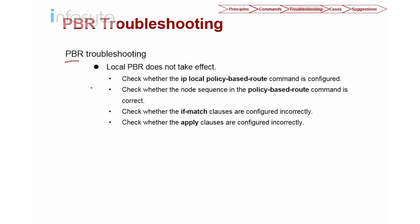For PBR troubleshooting: once you configure your policy-based route, you need to apply it using the local policy — 'IP local policy based route'. Use 'display IP policy based route' to check that the configuration is correct as well as to review the statistics. This covers troubleshooting for both route policy and policy-based route.